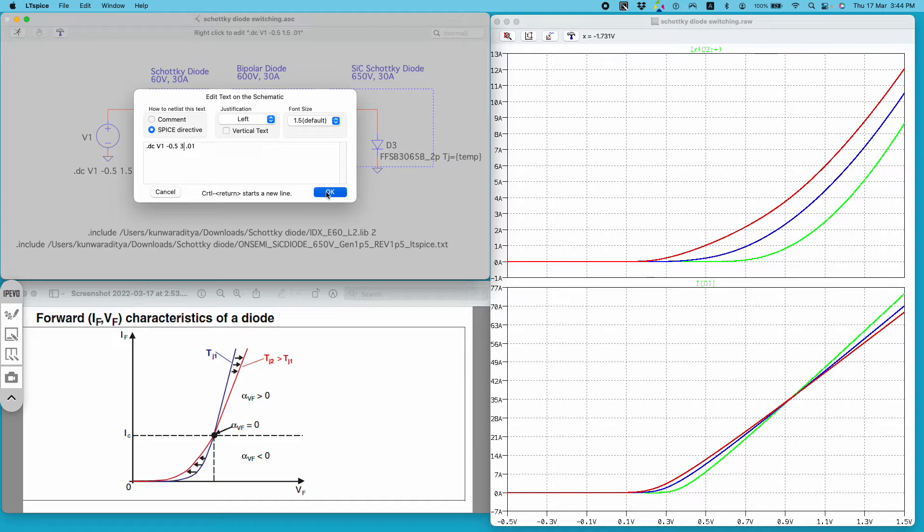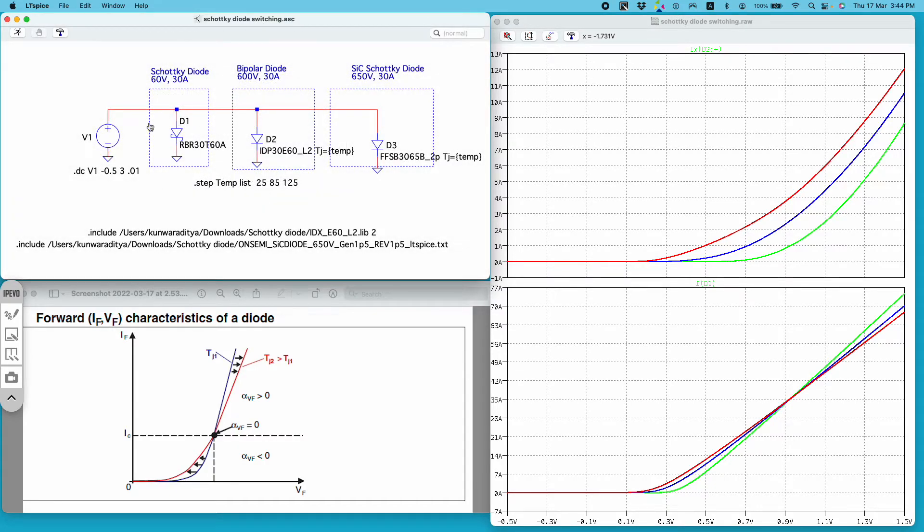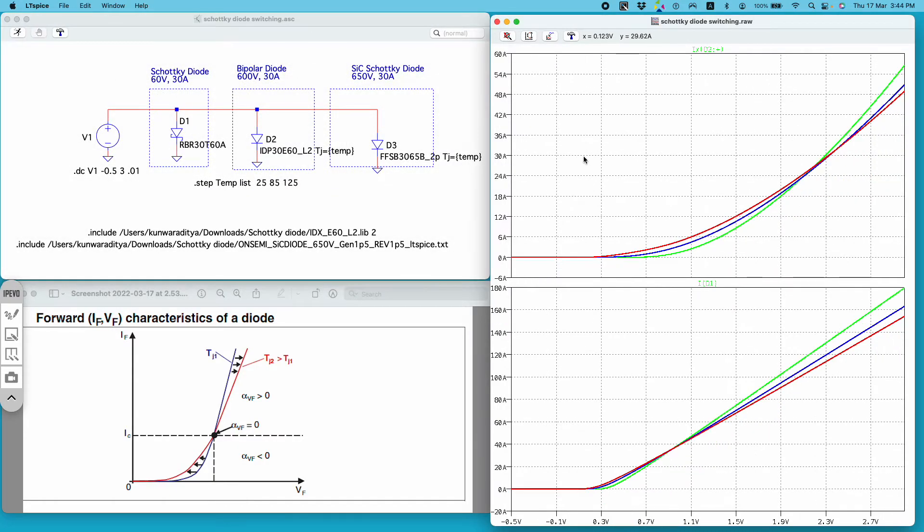There you go, you see the PN junction diode also has this transition point above which the temperature coefficient changes from negative to positive.